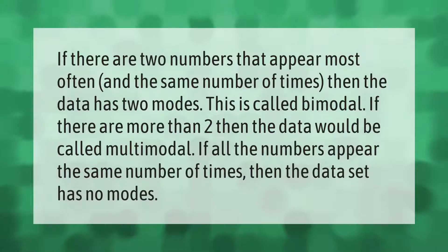If there are two numbers that appear most often and the same number of times, then the data has two modes. This is called bimodal. If there are more than two, then the data would be called multimodal. If all the numbers appear the same number of times, then the data set has no modes.